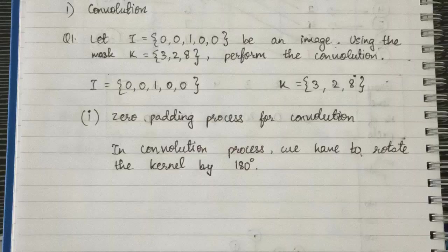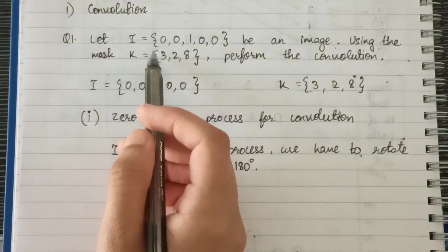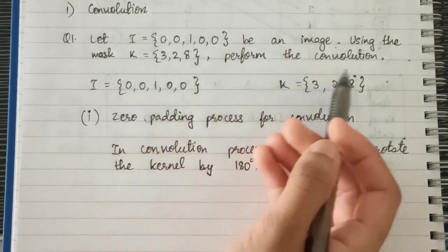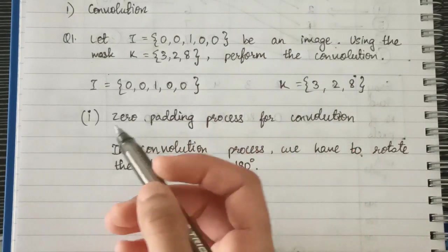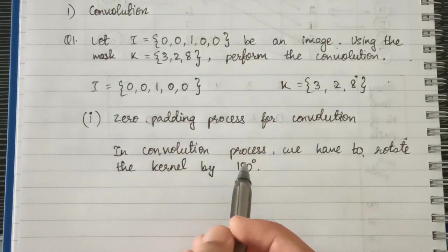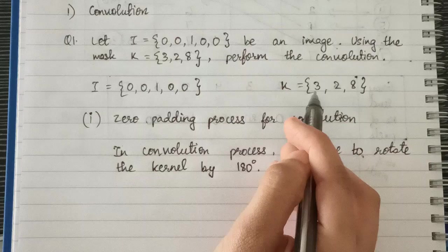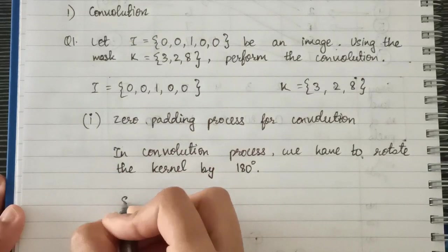Under linear spatial filtering we have two concepts: convolution and correlation. Let's look at an example. For convolution, let i equal to [0, 0, 1, 0, 0] be an image, and mask k equal to [3, 2, 8]. The first process we have to perform is zero padding. In convolution, we must rotate the kernel by 180 degrees, so we write the opposite: eight, two, three.